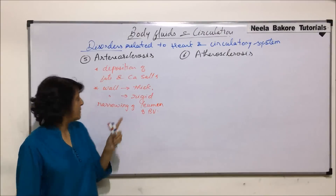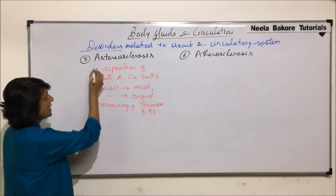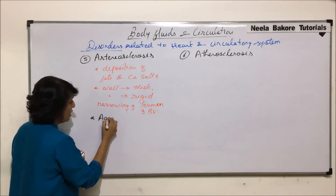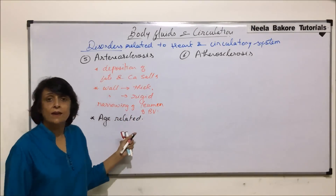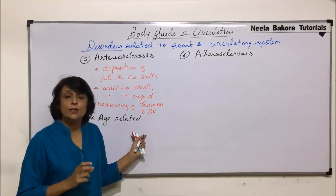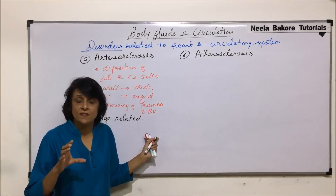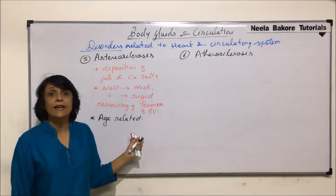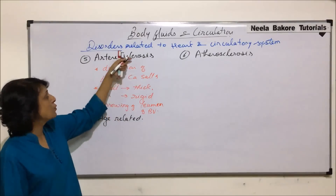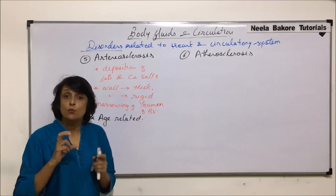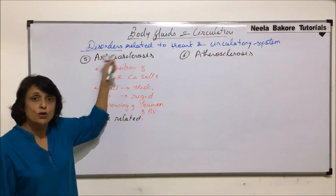There is one more reason for arteriosclerosis — it is also age related. When we talked about this earlier, we said age is one factor where the blood vessels lose their elasticity. They become more rigid and that is why blood pressure increases. So age-related rigidity of the blood vessel wall is the condition known as arteriosclerosis.